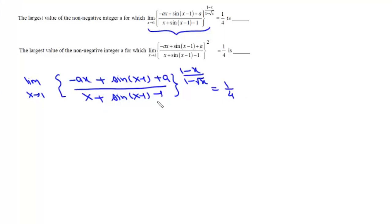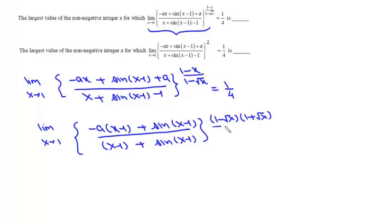Now what we will do is, we will take this A together and here we will take this 1 and x together. So we can write this as limit x tends to 1 of minus A(x minus 1) plus sin(x minus 1) upon (x minus 1) plus sin(x minus 1). And in the numerator, we will write this as A squared minus B squared, so 1 minus root x times 1 plus root x divided by 1 minus root x, and it equals 1/4.